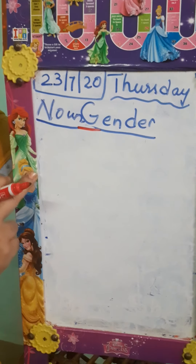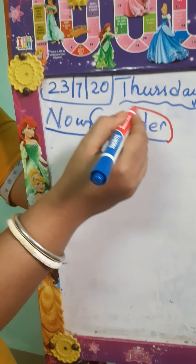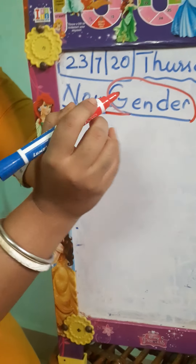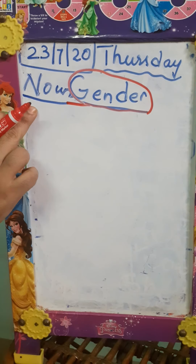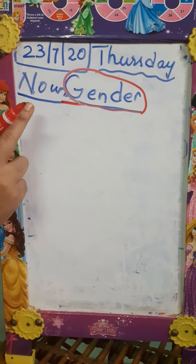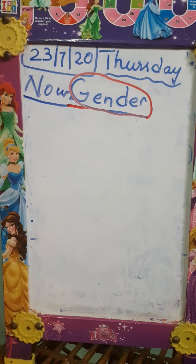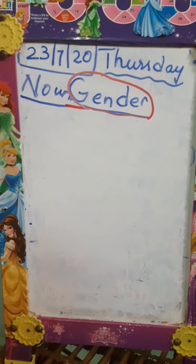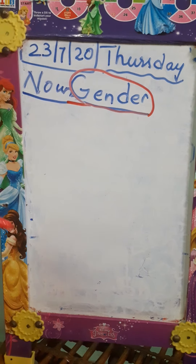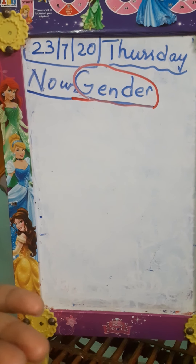Hello children, today we will see what are genders. In the last class, this is a form of noun. In the last class, we have learned singular and plural. Singular is one and plural is more than one.